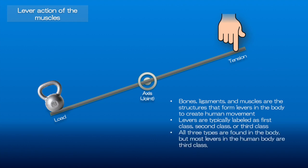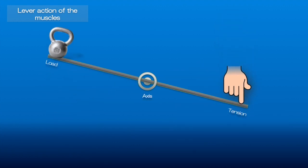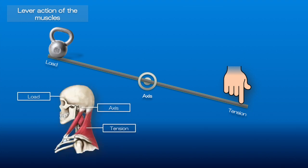A first class lever has the axis located between the load and the force. First class levers in the human body are rare. One of the examples here is the joint between the head and the first vertebra, the atlanto-occipital joint.